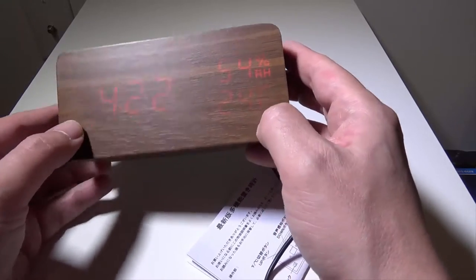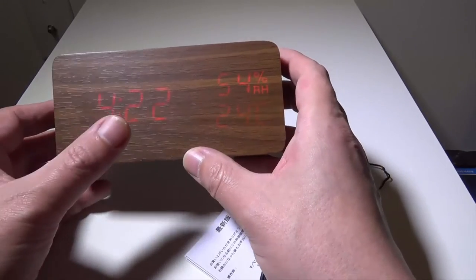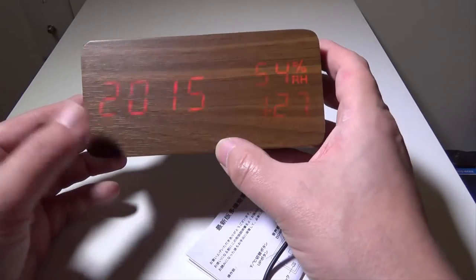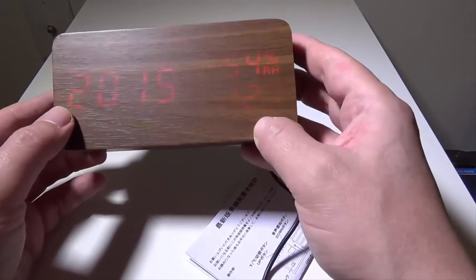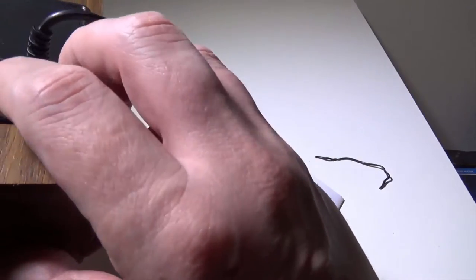You can set the date as well. Right now it's in Celsius, so I'll have to change it to Fahrenheit for me. It's 54% humidity in here and it says 4:22. It's not actually 4:22 because I haven't set anything up, but very cool. It gives you the date as well.